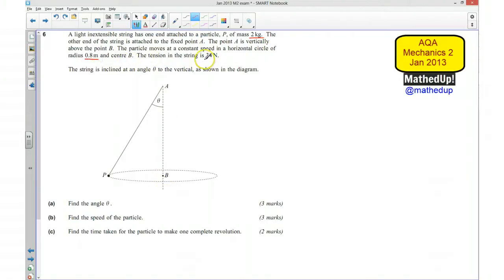The tension in the string is 34 newtons, and the string is inclined at an angle theta to the vertical as shown in this diagram. For part A we need to find the angle theta.